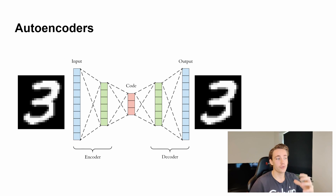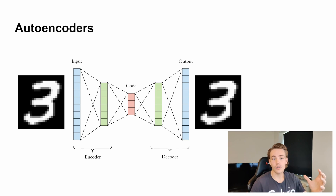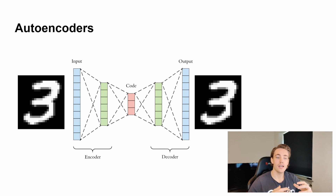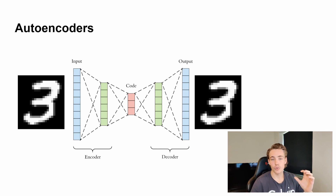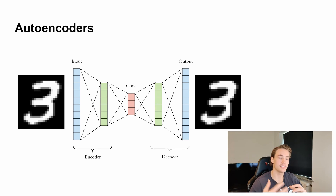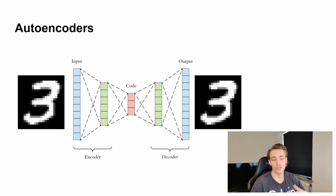Here we're just shortly going to talk about what autoencoders are. I've already made a video where we went more in depth with autoencoders and did the code in PyTorch, but in this video we're just going to shortly cover what autoencoders are and then go into Keras to see how we can implement it, as we've done throughout this whole tutorial with TensorFlow and Keras.